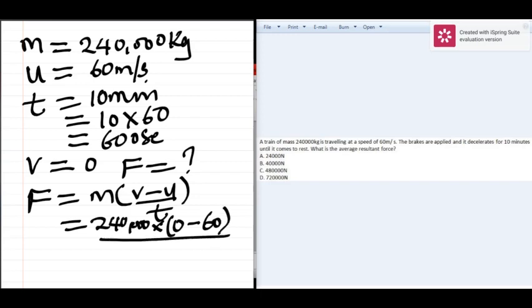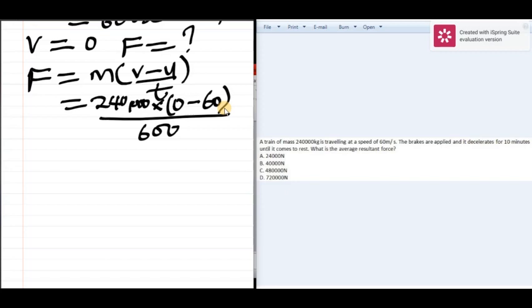The time is 600 seconds. Using a calculator, the average force would give us 24,000 Newtons. So that is the average force. The average total force is 24,000 Newtons.